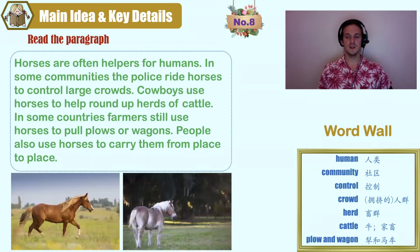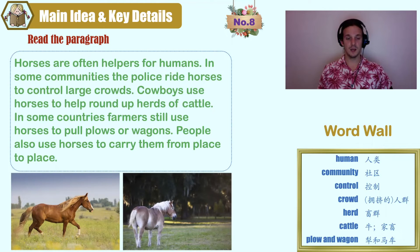Number eight. Key words: human, community, control, crowd, herd, cattle, plow, wagon.